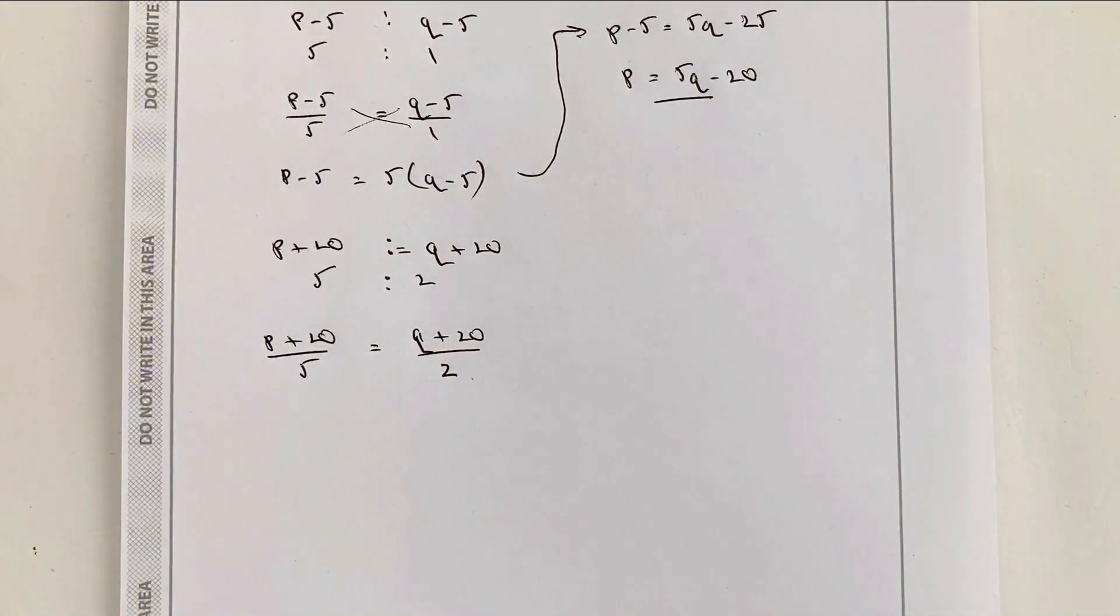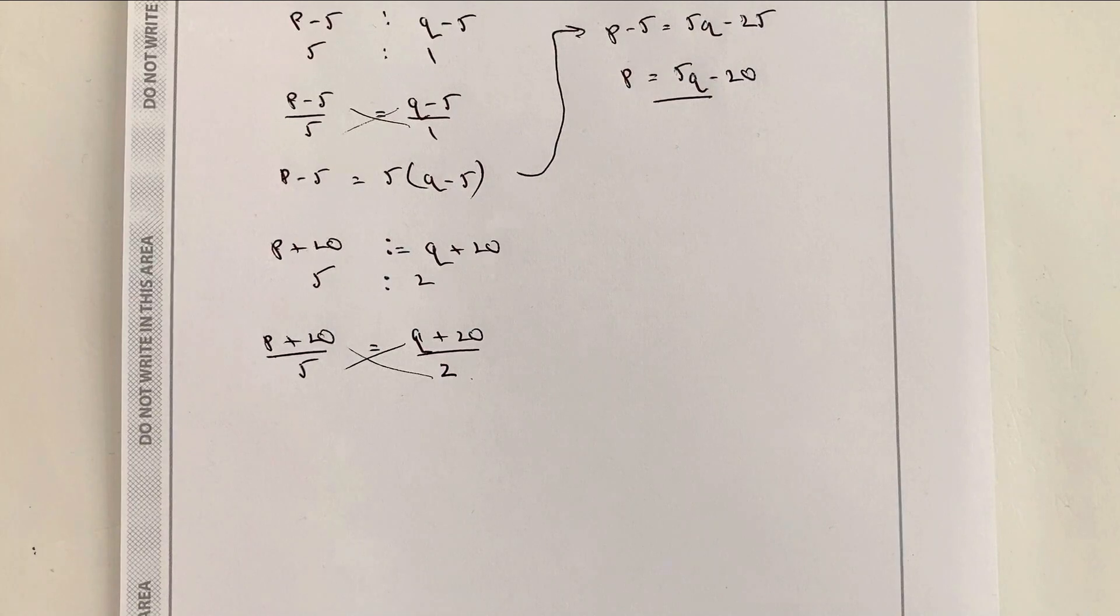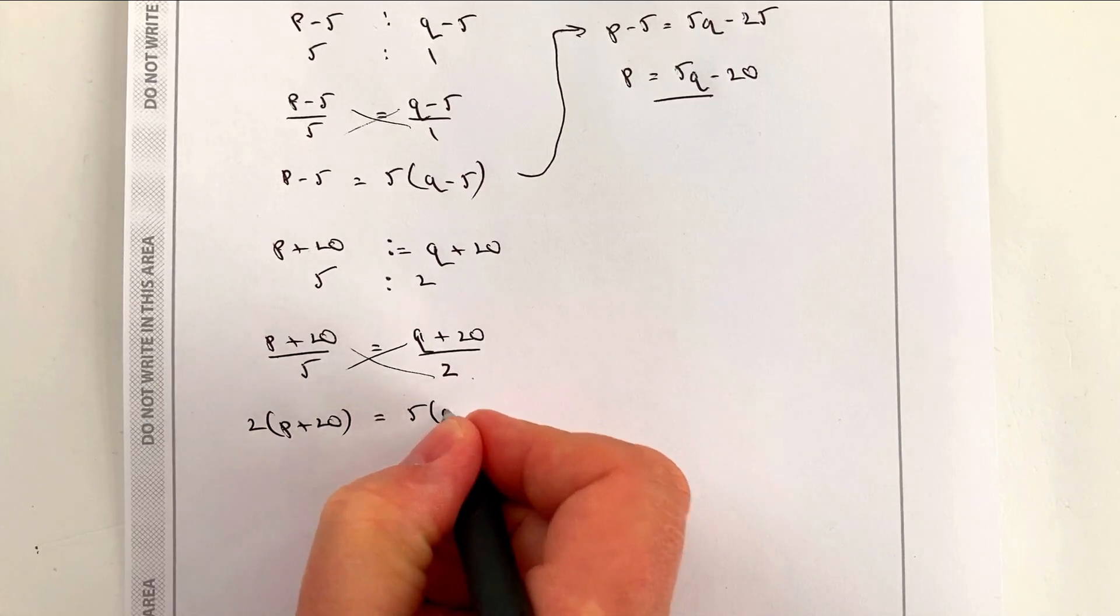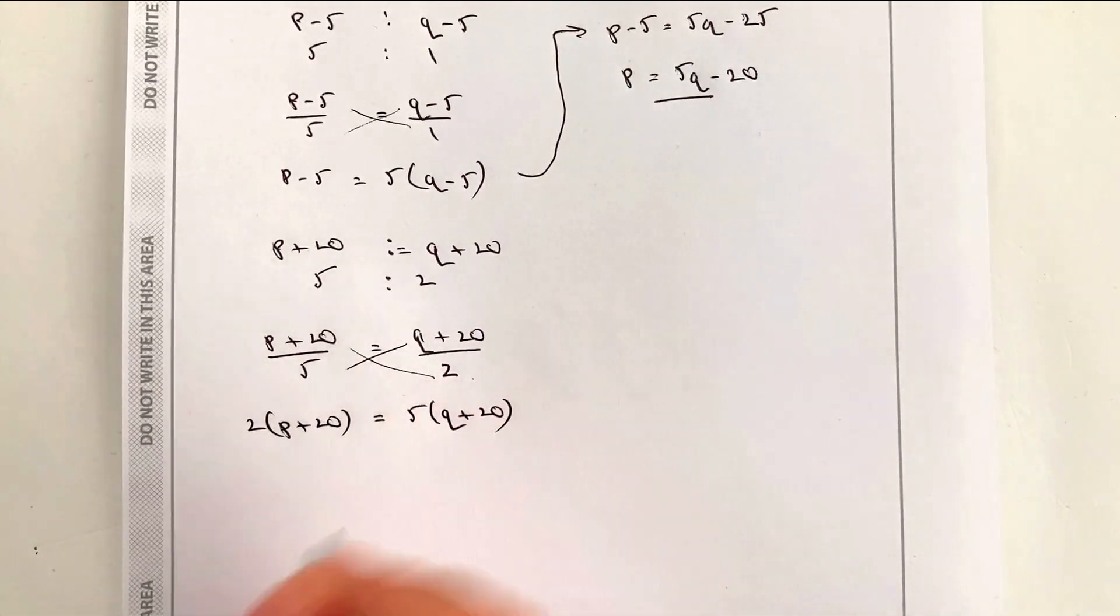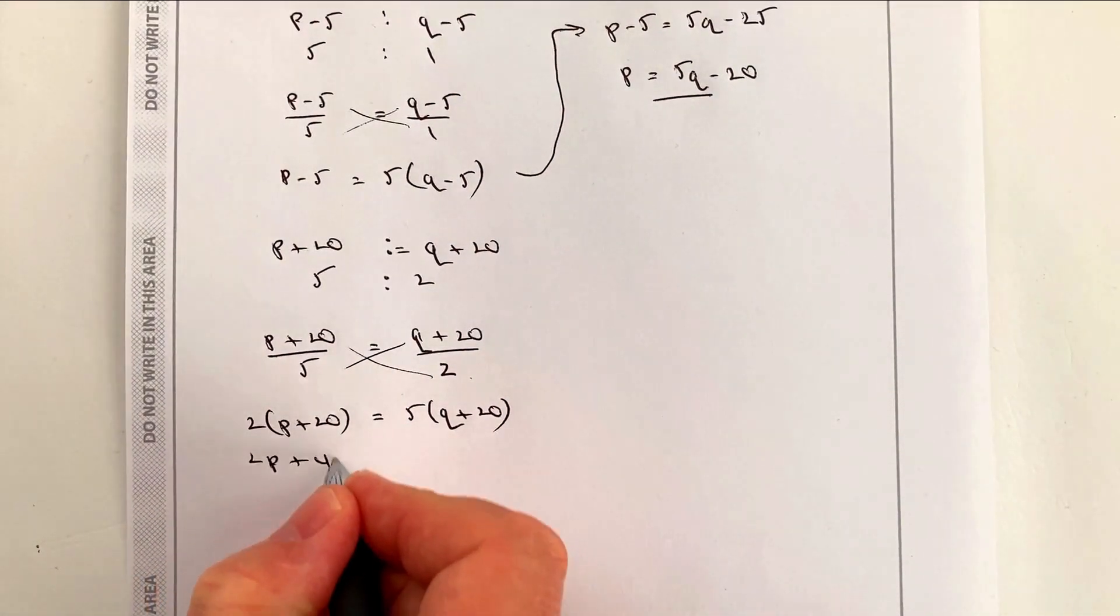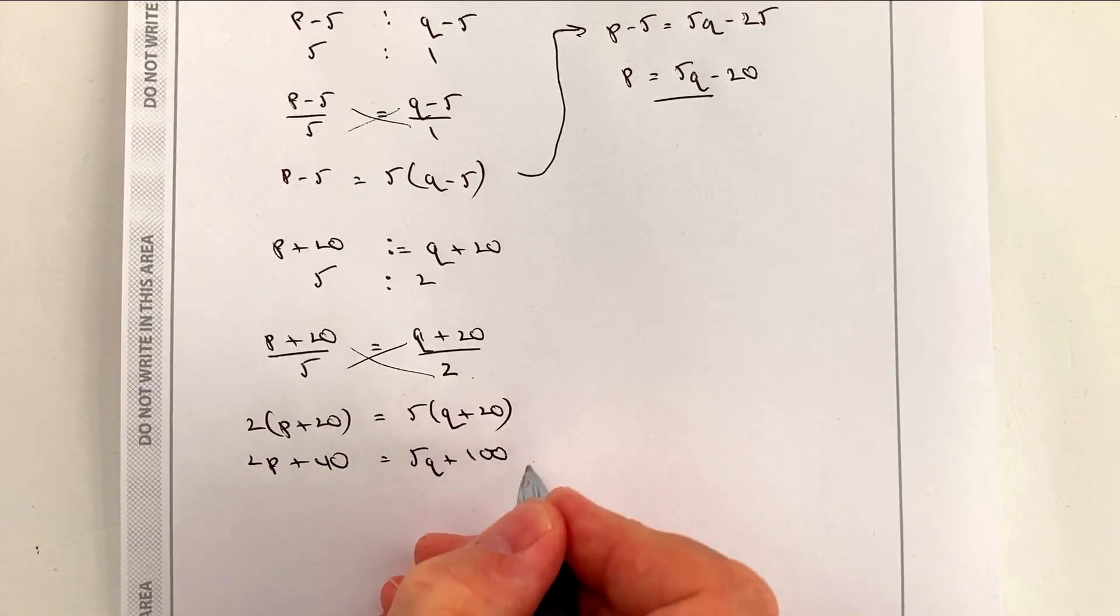So we've got P plus 20 in the ratio of Q plus 20, which is 5 to 2. As I did before, I'm going to write that as a fraction. I'm going to write that as P plus 20 over 5 equals Q plus 20 over 2. And again, I'm going to cross multiply through. So if I cross multiply through, I get 2 times P plus 20 and 5 times Q plus 20. And I can write that as 2 times P plus 20 equals 5 times Q plus 20. So where is this going to take us? We're going to try to find a way to get values of P's and values of Q's. Let's have a look at expanding that out. I'm going to get 2P plus 40 equals 5Q plus 100.